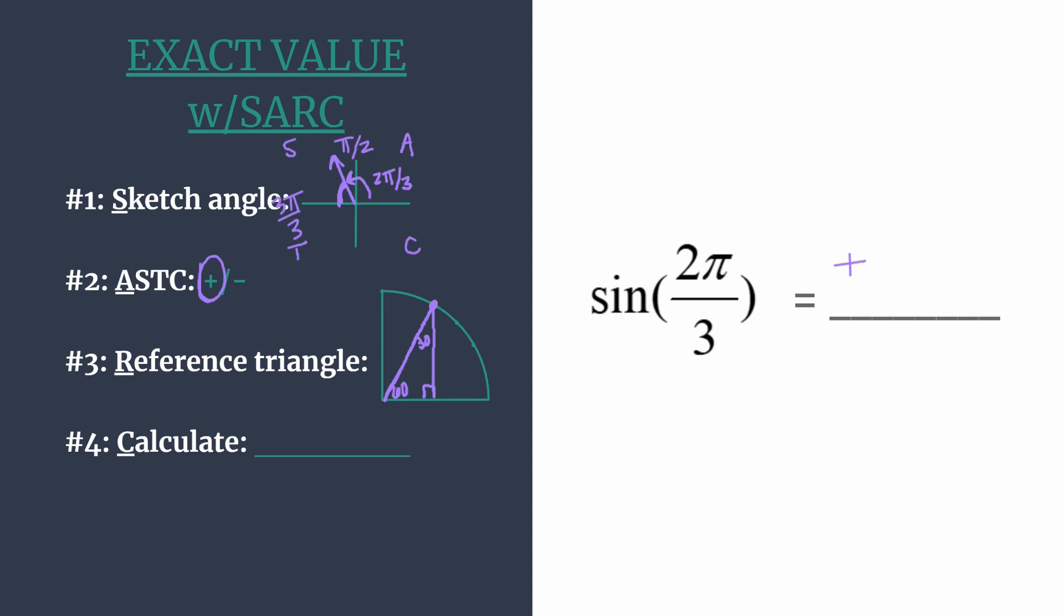So we know that the coordinates that go with that on the unit circle, the shorter leg is horizontal. So that's one half and the longer leg, the vertical is square root three over two.